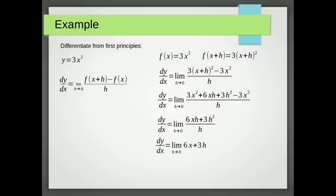If we let h go to 0, well, that's going to have no effect on the 6x because there's no h there. But the 3h will go to 0. So we end up with dy by dx equals 6x.